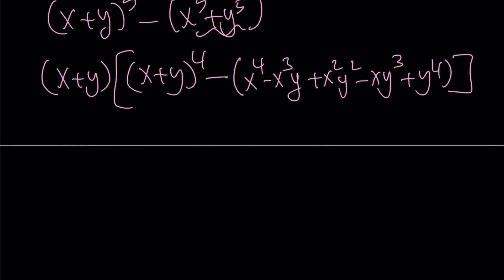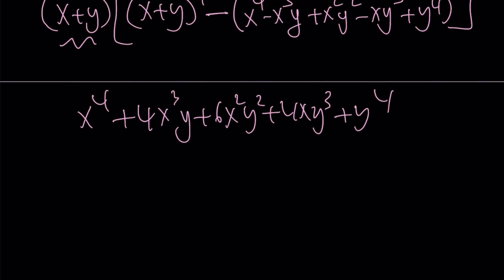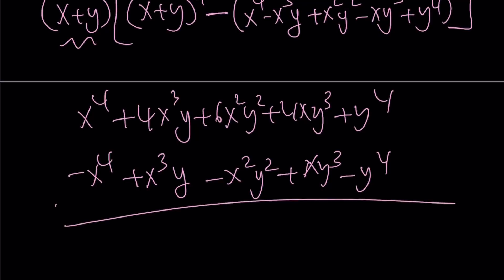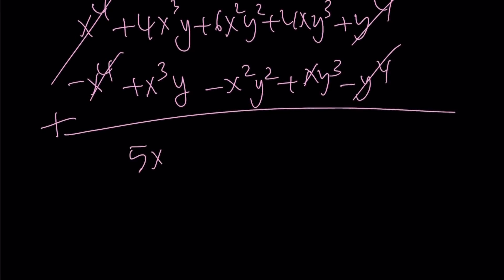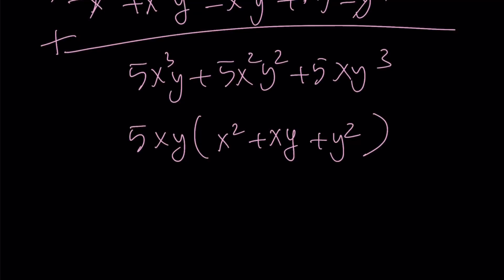Now let's go ahead and expand x plus y to the fourth and subtract that, leaving the x plus y factor for now. X plus y to the fourth is going to be x to the fourth. The coefficients from Pascal's triangle fourth row are 1, 4, 6, 4, 1. Since we're going to subtract, let's negate everything and add: negative x to the fourth, plus x cubed y, minus x squared y squared, plus xy cubed, minus y to the fourth. Now we're going to add these up, and things are going to cancel out again. The sum is going to be 5x cubed y plus 5x squared y squared plus 5xy cubed. We can factor out 5xy and get x squared plus xy plus y squared. Does that look familiar? And this is going to be my denominator.